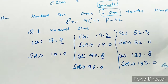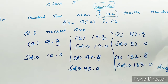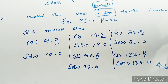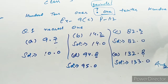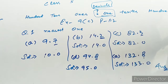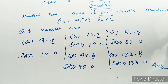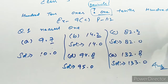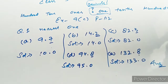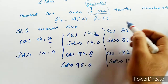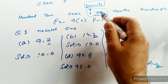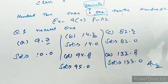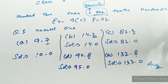देखो यहां पे ये A, B, C, D — ये सारे parts आपके यहाँ पे हैं। अब देखे चलते हैं आगे और करते हैं nearest tenths वाले को। Tenths वाले का मतलब — point के बाद हमारे पास 2 digits होंगे क्योंकि पहला जो है वो ones जाता, दूसरा जो है वो tenths आता है।